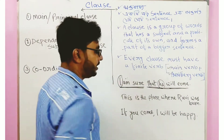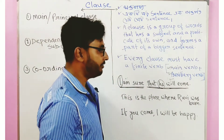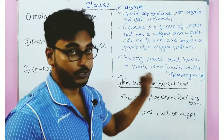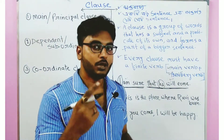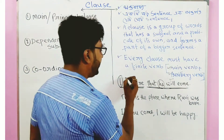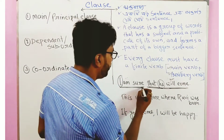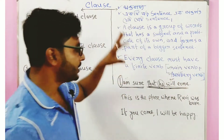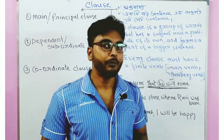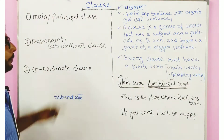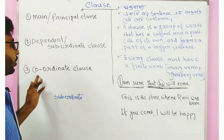A group of words with a finite verb forms a clause. If a sentence has a finite verb, it can be called a clause. So a clause must have a finite verb. Clauses are of three types: main clause (principal clause), dependent clause, and coordinate clause.